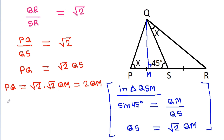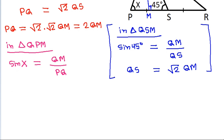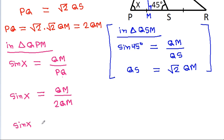Now in triangle QPM, sin x will be equal to QM by PQ. So sin x equals QM divided by 2·QM, which gives sin x equal to 1 by 2. That means x is equal to 30 degrees.